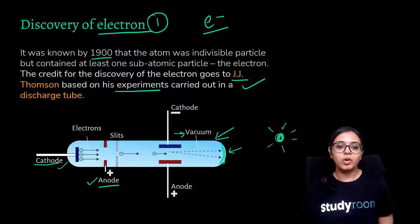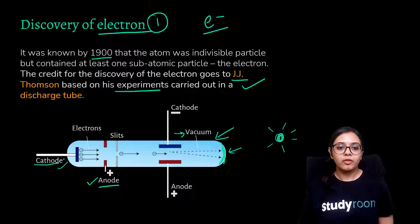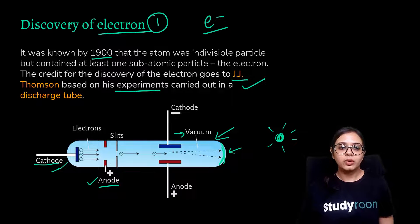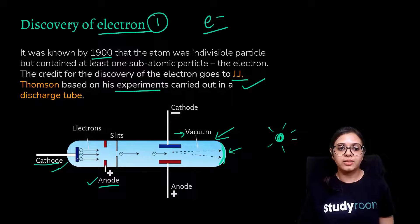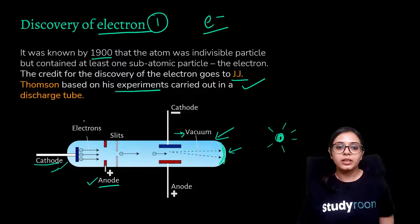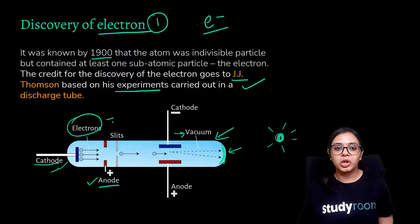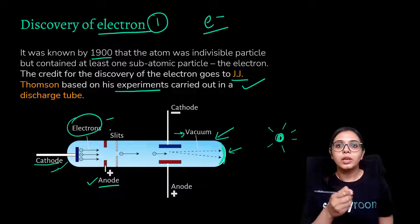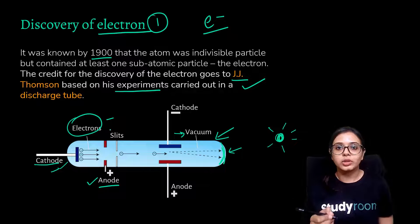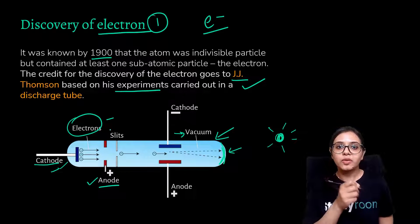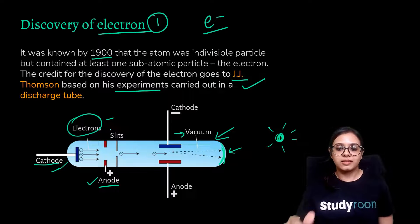Thomson observed that some particles traveled from the negative cathode to the positive anode. Since there was travel of particles from the negative to the positive source, he concluded that these are electrons because they are negatively charged. That is how he came to the conclusion that electrons are subatomic particles.